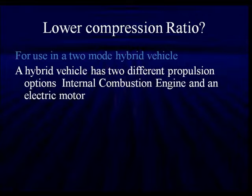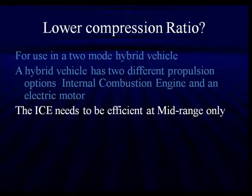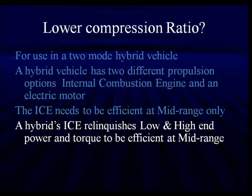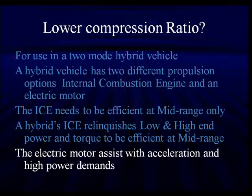A two-mode hybrid uses this Miller-Atkinson cycle. In a hybrid vehicle, there are two propulsion options: an internal combustion engine and an electric motor. The ICE needs to be efficient at mid-range only — that's where it runs by itself without much contribution from the electric motor. The ICE relinquishes low-end and high-end power and torque to be efficient at mid-range. Because we have variable valve timing, this isn't quite that drastic, and the electric motor assists on acceleration and high-power demands. So we don't need all the power out of a Miller engine that we'd need from a standard engine.